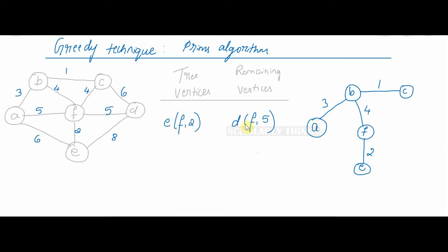The remaining vertex is D F, 5. From F go to D with weight 5. Now we have covered all the vertices. The weight of this minimum spanning tree is 1 plus 3 plus 4 plus 5 plus 2. That is 15.